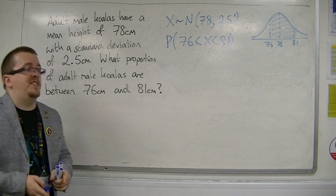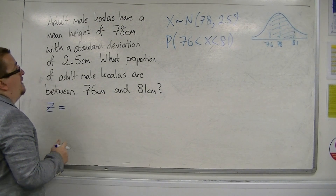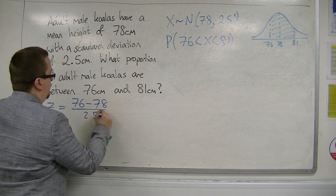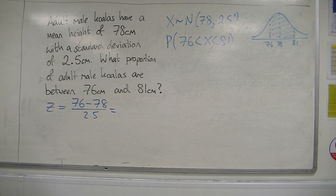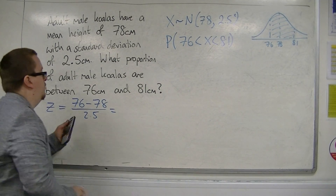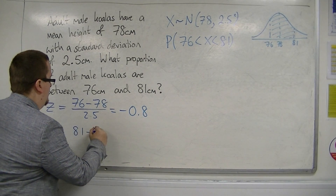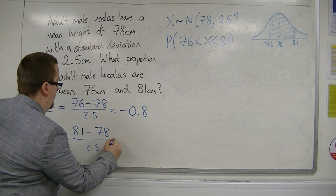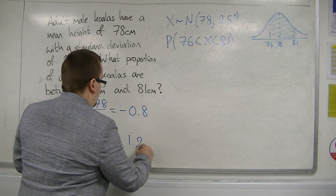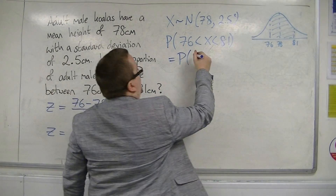We're going to need two z-statistics: one for the 76 and one for the 81. The formula is z equals x minus the mean divided by the standard deviation. So 76 take away 78 divided by 2.5 gives minus 0.8, and the second z-statistic is 81 take away 78 over 2.5, which gives 1.2. So this is going to be equal to the probability of z being between minus 0.8 and 1.2.